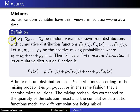Here is a definition. Let x1, x2, up to xk be random variables drawn from distributions with cumulative distribution functions Fx1(x), Fx2(x), all the way up to Fxk(x). Now let p1, p2, up to pk be positive mixing probabilities where p1 plus p2 plus ... plus pk equals 1.